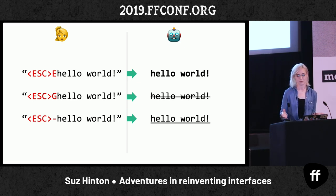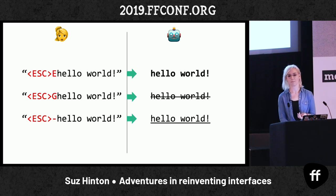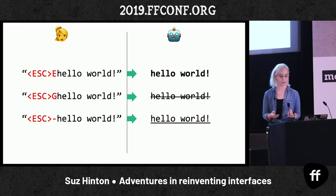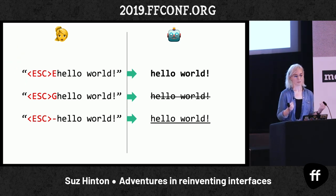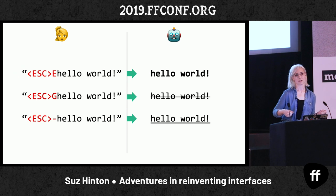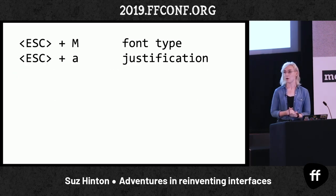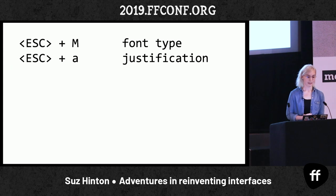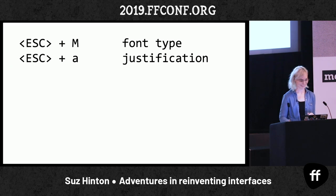That satisfies almost all of the requirements. But we still need font type and justification — whether you want left, center, or right alignment. The robot knows to display text in certain fonts, so we want to give people a choice. There are three font choices and three justification types. Let's use capital M for font type, and lowercase A for justification because there's an A in justification.